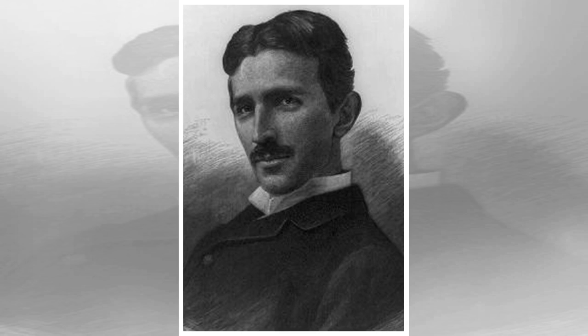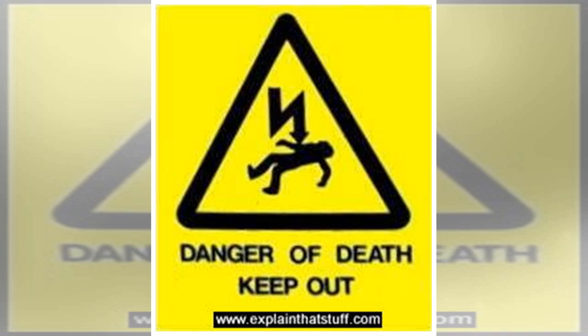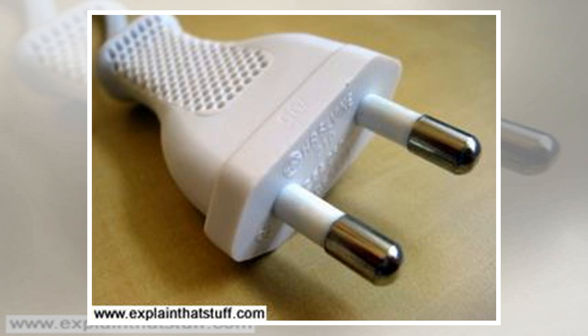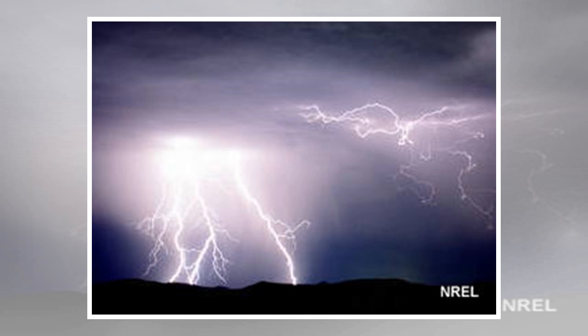Static electricity often happens when you rub things together. If you rub a balloon against your pullover 20 or 30 times, you'll find the balloon sticks to you. This happens because rubbing the balloon gives it an electric charge. The charge makes it stick to your pullover like a magnet, because your pullover gains an opposite electric charge. So your pullover and the balloon attract one another like the opposite ends of two magnets.